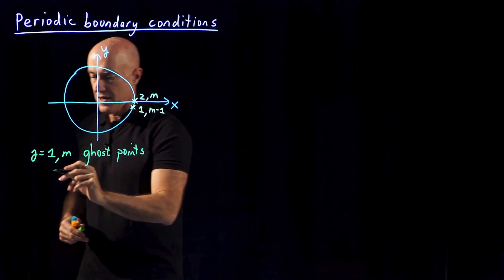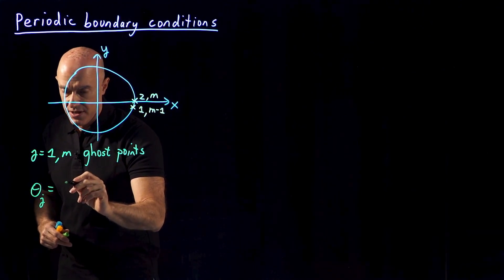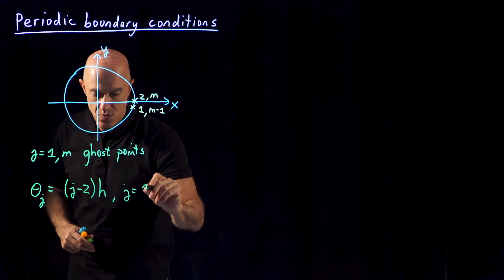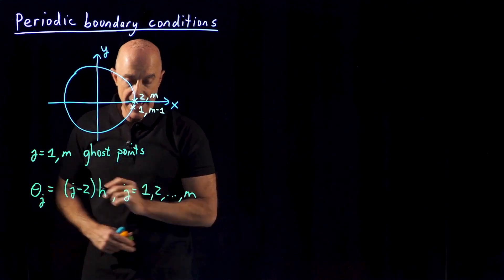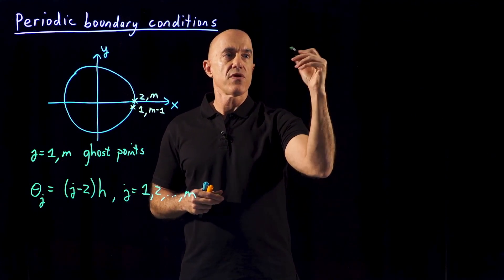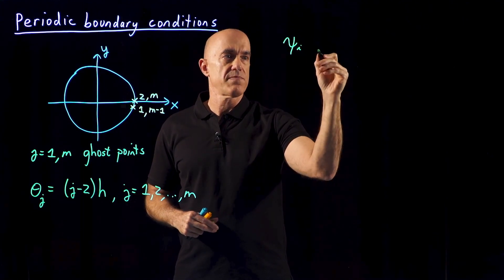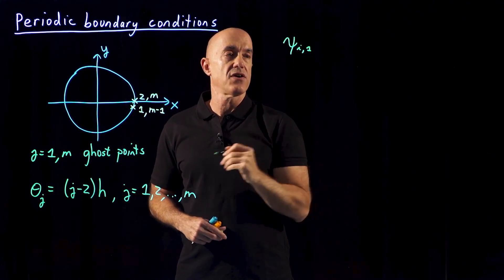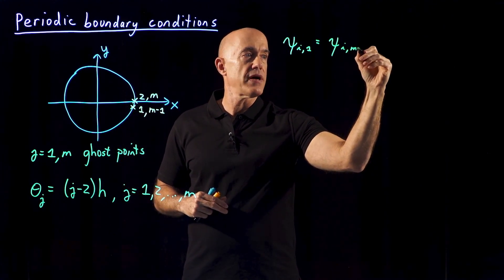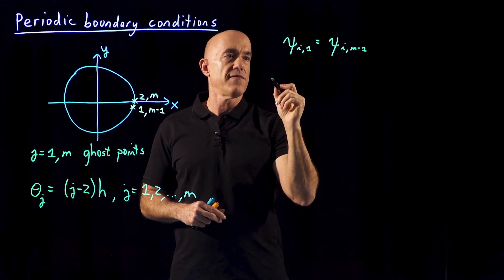The first grid point is the same as the m-1 grid point, and the second grid point is the same as the m grid point. These are our boundaries. The polar angle θ_j is going to start at minus h, so it will be (j−2)×h when j=1, meaning starting at minus h, running from j=2 to m. The boundary condition on the stream function is: psi for all radial coordinate points at the first theta point equals psi for all radial points at the m-1 theta point.